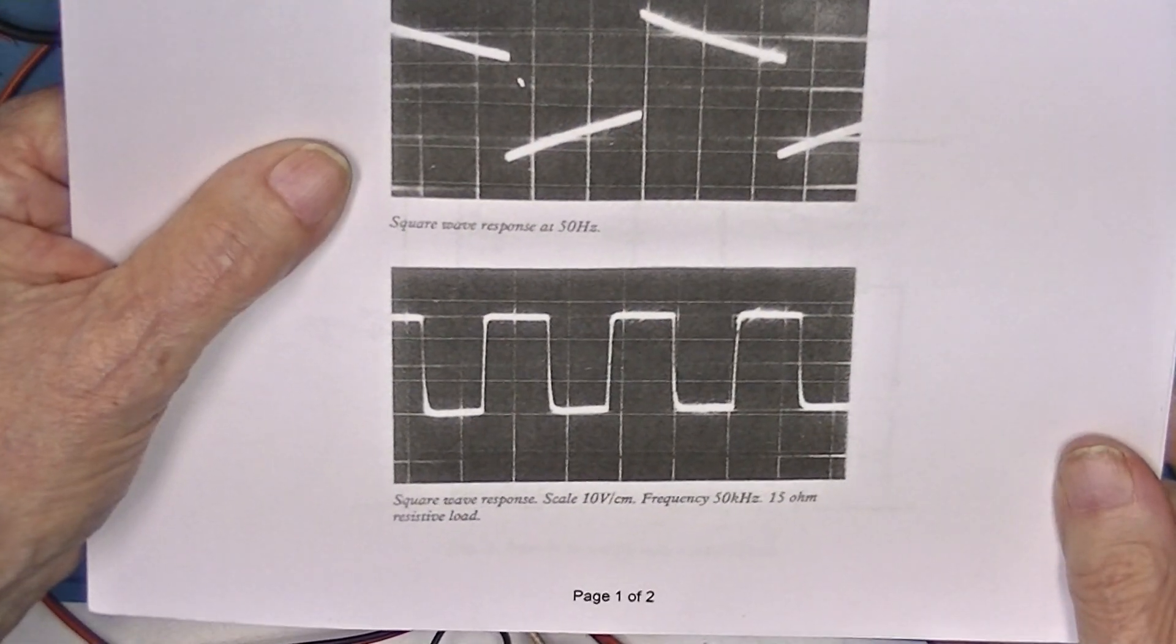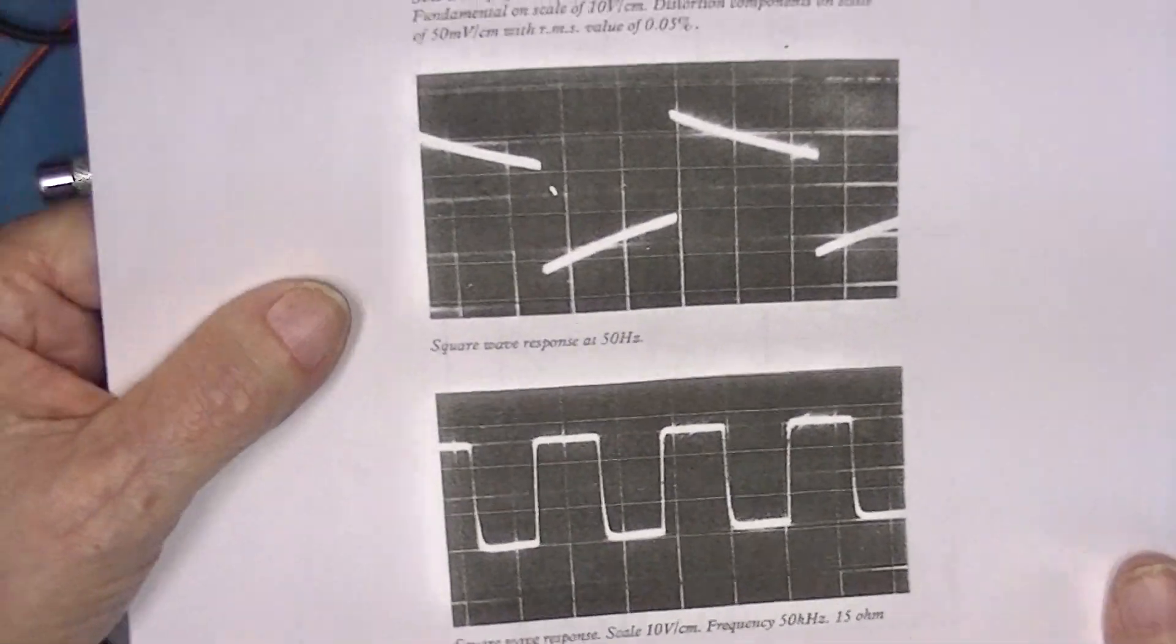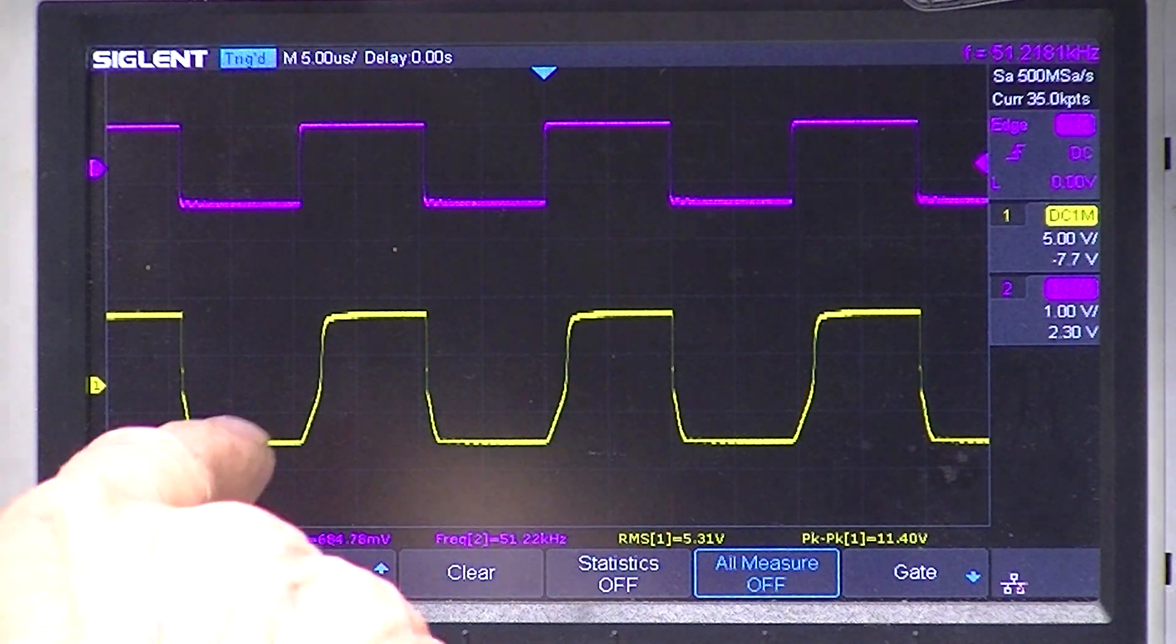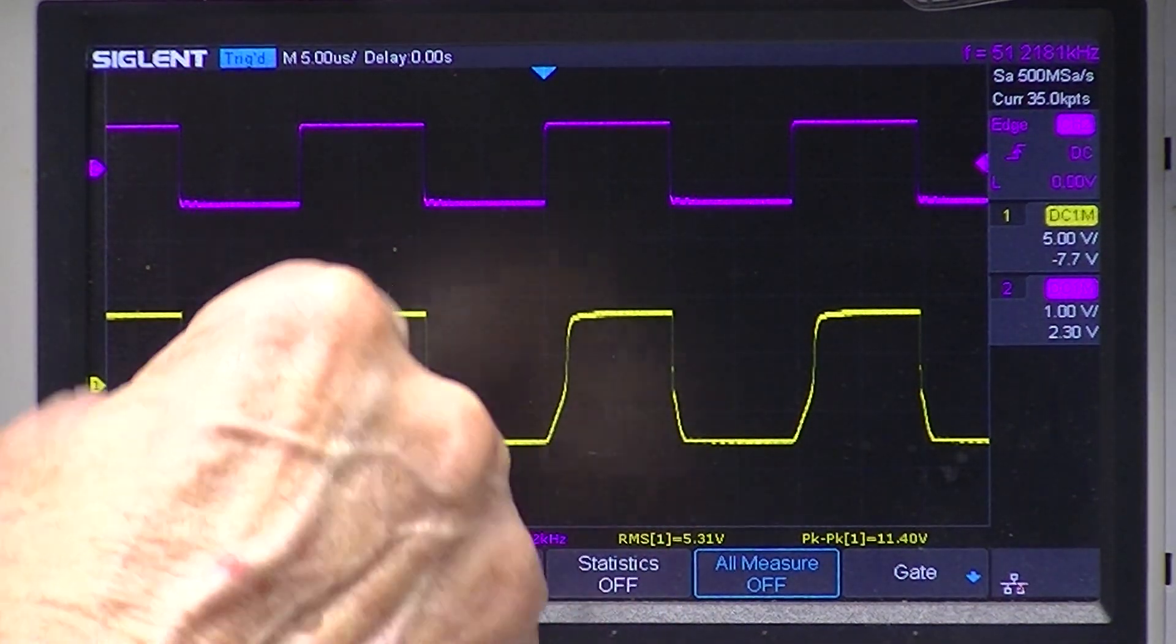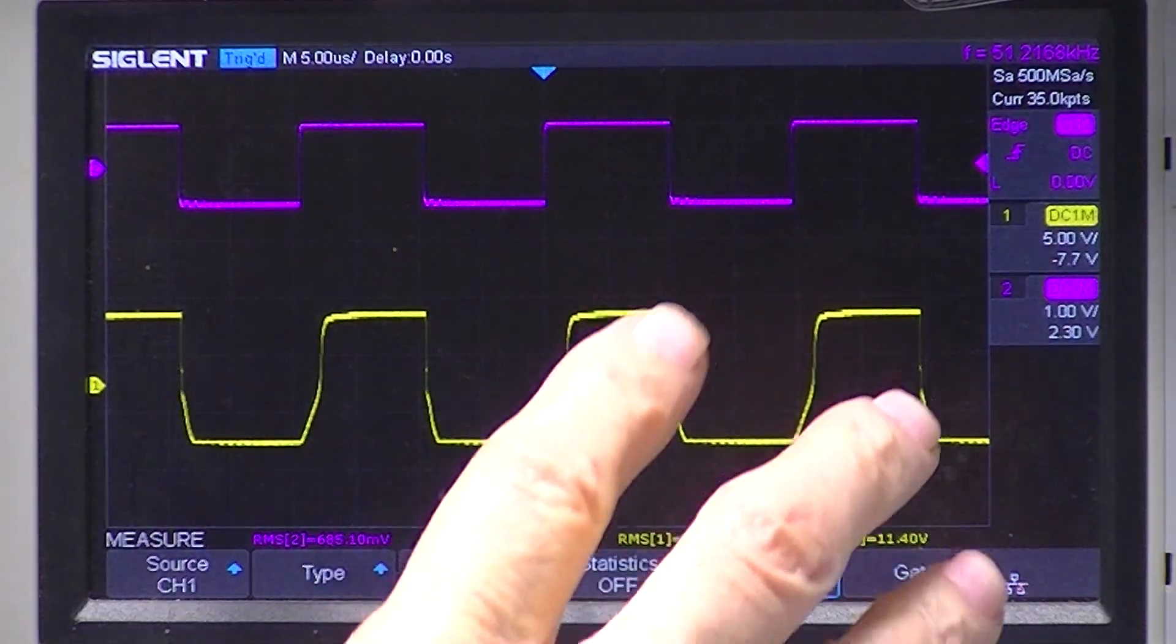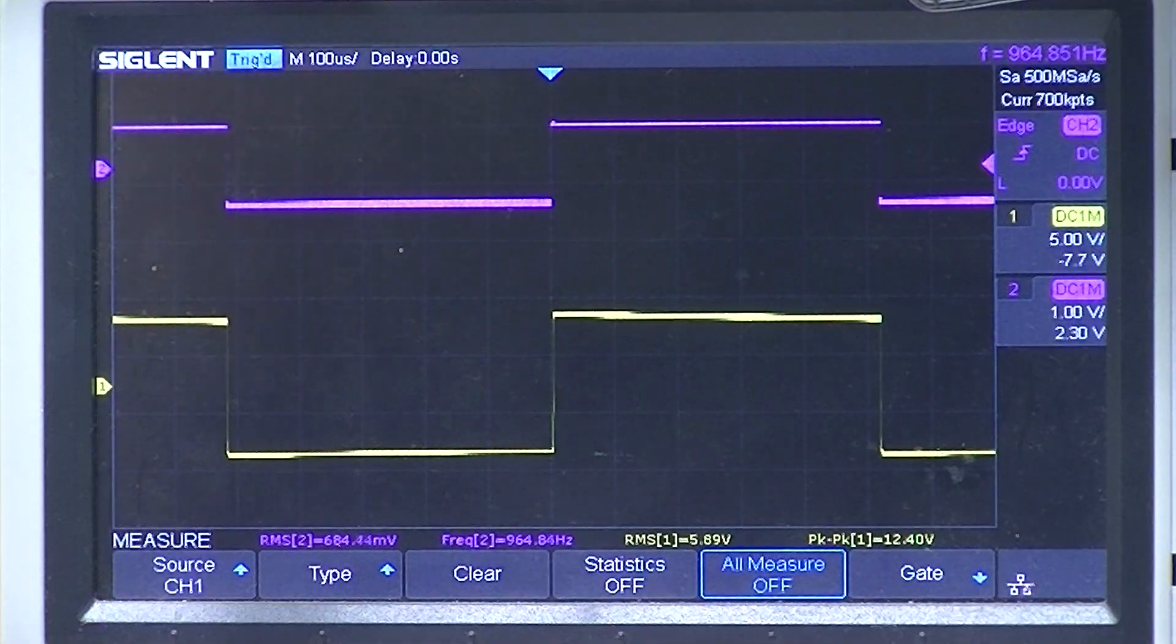Now the next test he does is at 50 kilohertz. And this is 50 kilohertz. The top doesn't look bad. The bottom has a narrowing to it. Let's try 1000 hertz, which is a common audio test. So there's 1000 hertz.